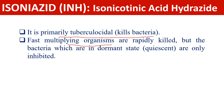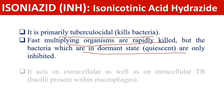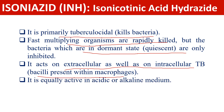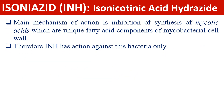Fast-multiplying organisms are rapidly killed, but bacteria which are in a dormant or resting stage are only inhibited. Isoniazid acts on extracellular as well as intracellular TB bacilli, which are present within the macrophages, and it is equally active in acidic and alkaline medium.